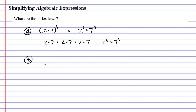Alright, index law 5 is very similar to index law 4. This time we're going to have 2 over 7, like a fraction, in brackets, and all this is going to be put to the power of 3. We're going to follow the exact same method as index law 4, where we take both numbers and give them that power of 3. The only difference is that instead of multiplication it's going to remain a fraction — division. So we're going to have 2 to the power of 3 over 7 to the power of 3.